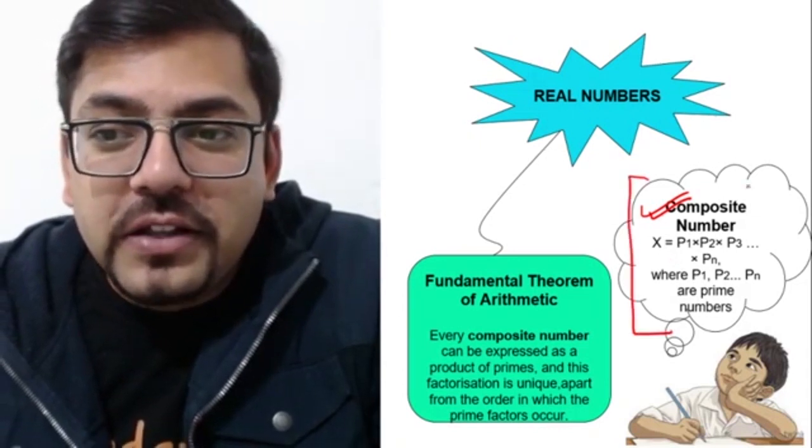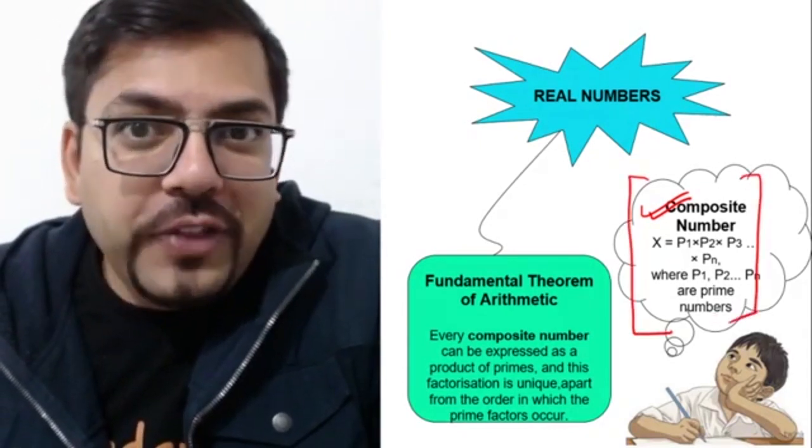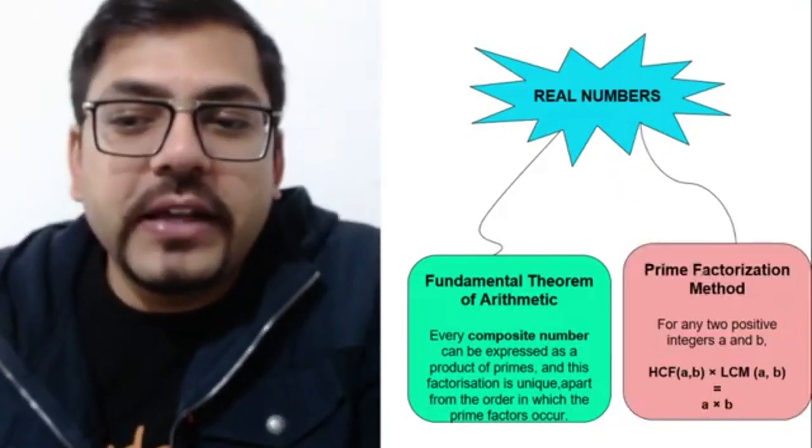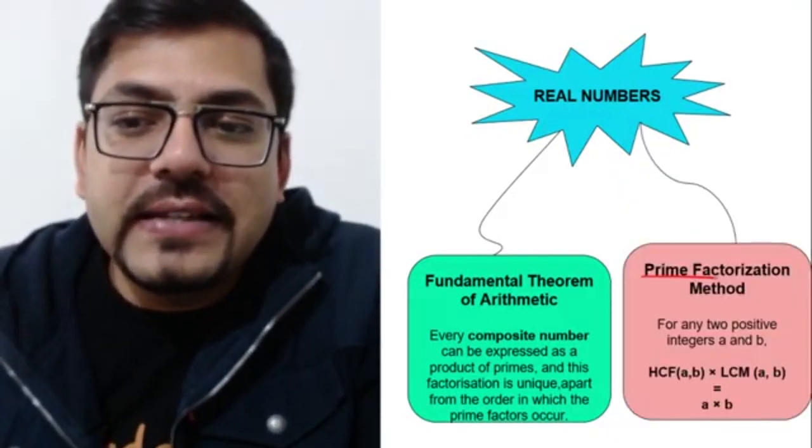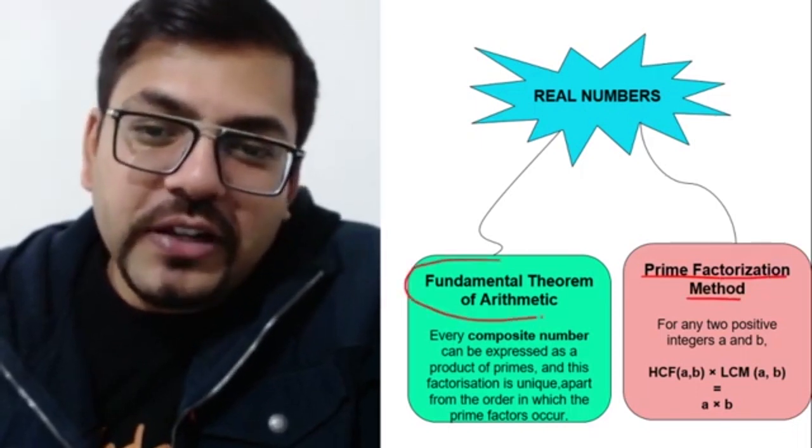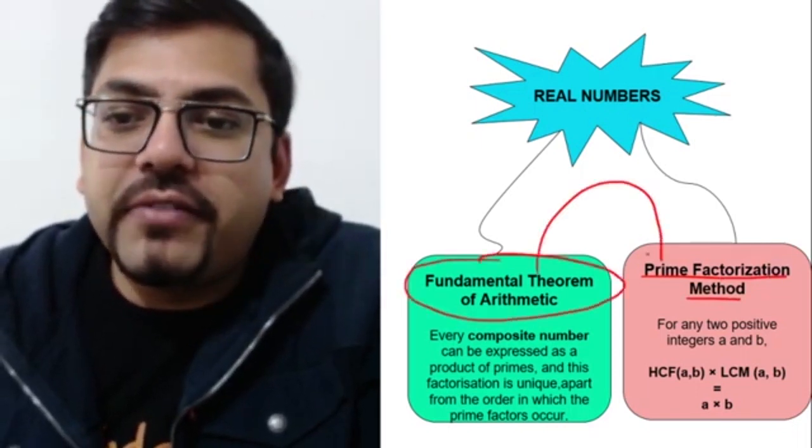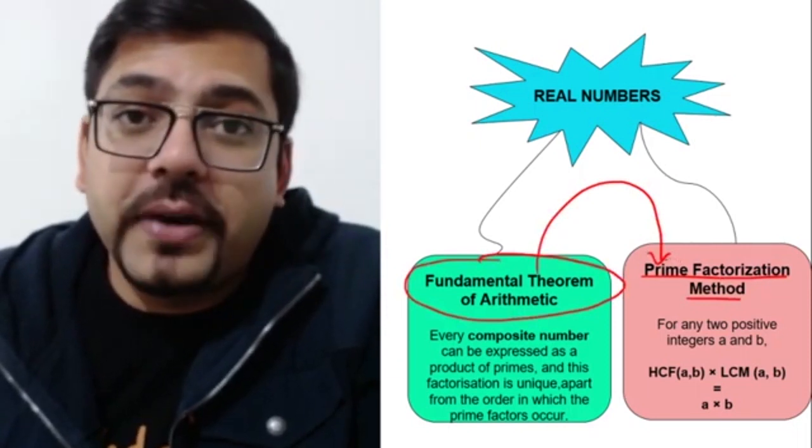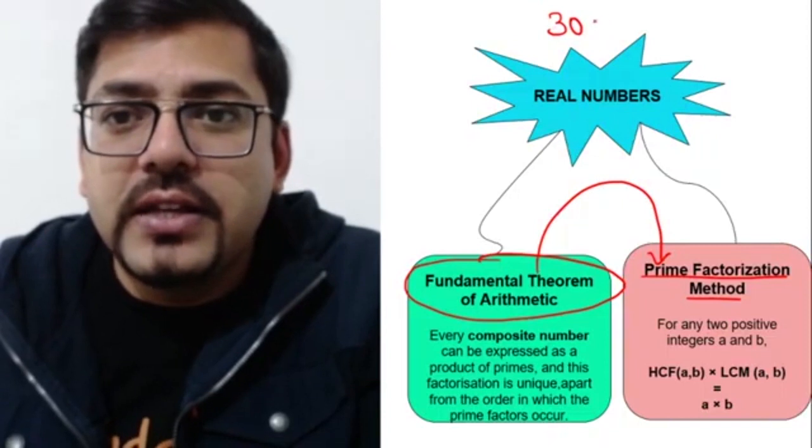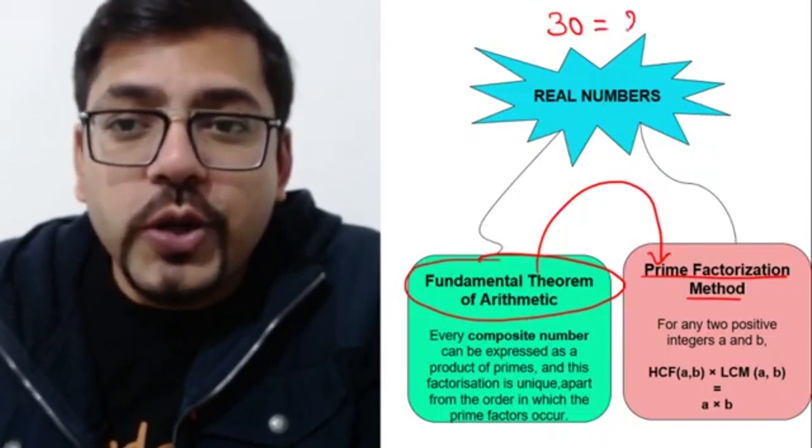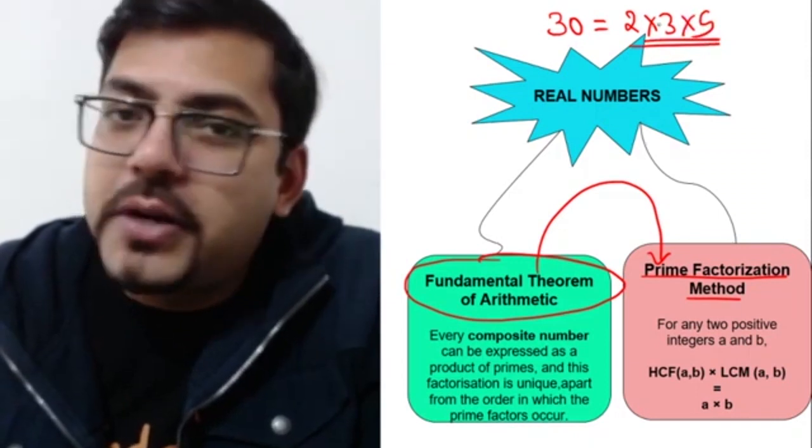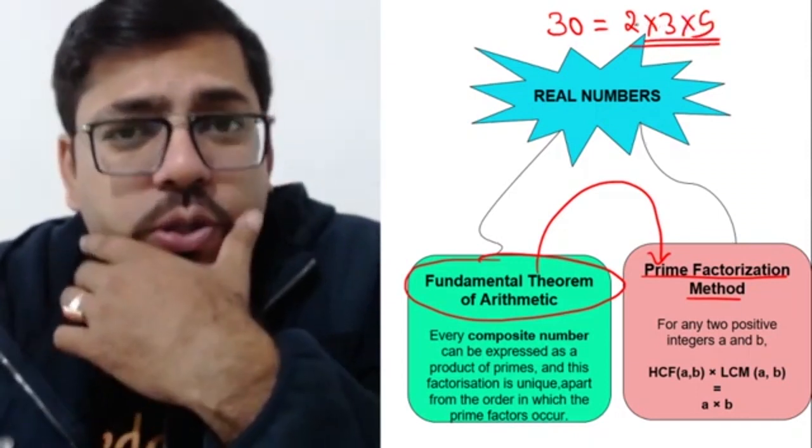And then one fine day when I deciphered that this great Morse code kind of thing is not actually a code, it is just a simple thing which says that it is simple prime factorization. So fundamental theorem of arithmetic is nothing but prime factorization - it's another name for prime factorization. Say for example, whatever number you have, let's say 30, you have to write 2 into 3 into 5. That's it. This is called as fundamental theorem of arithmetic.